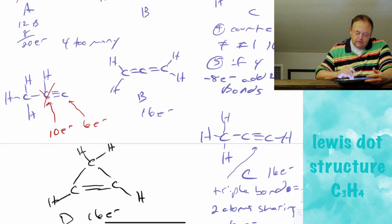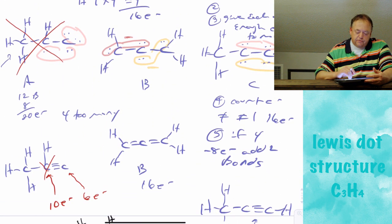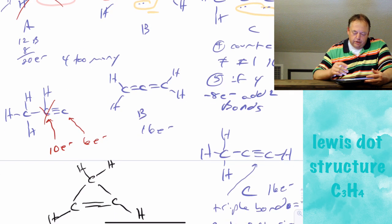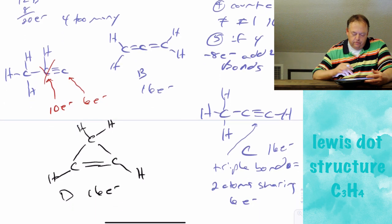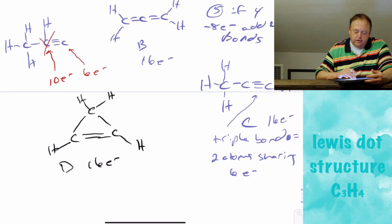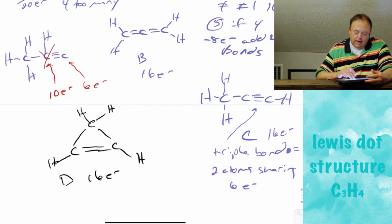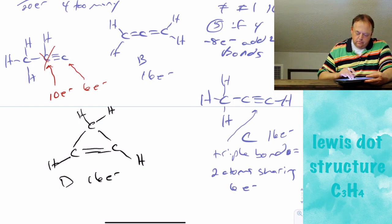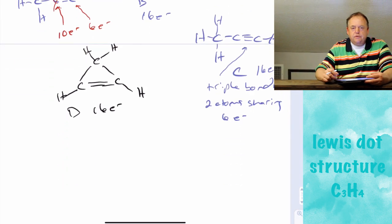On a quiz or test, if given C3H4 and asked for a valid Lewis dot structure, I would accept molecule B, C, or D — any one of them is great. In organic chemistry, you would be expected to come up with all possible structures: B, C, and D. That's it for C3H4.